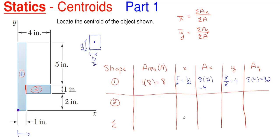That completes shape number one. Moving on to shape number two: the area is still calculated the same way. The overall dimension is four inches, so this horizontal piece is three inches wide and one inch tall. The area would be one times three, which is three square inches.